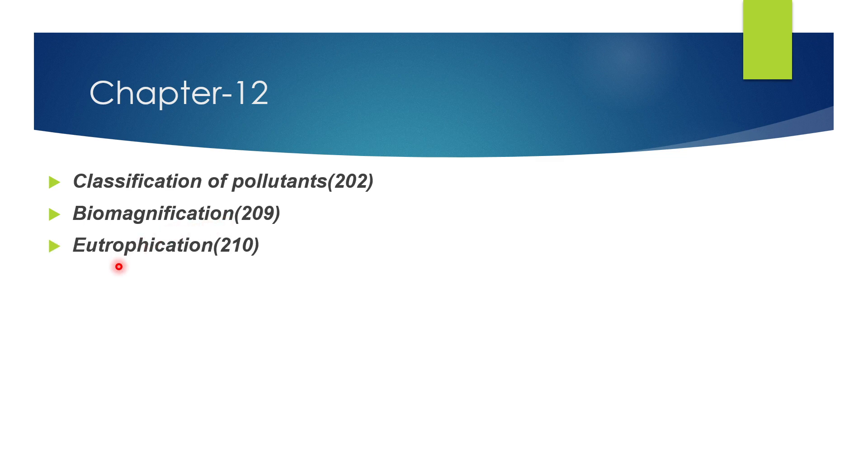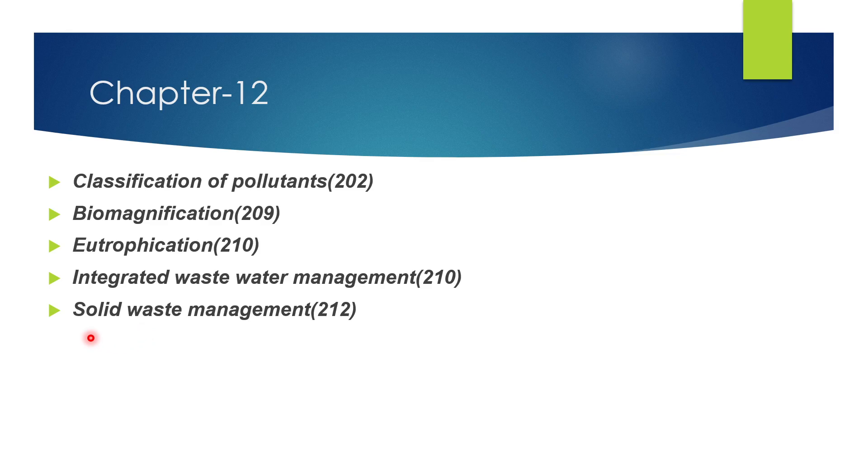Moving on to chapter 12, Pollution and Environmental Issues. Classification of pollutants: biodegradable and non-biodegradable - three types with definition and examples, page 209. Define biomagnification. Biomagnification of DDT is an important question, page 209. Next, what is eutrophication? Page 210. Explain integrated wastewater management - five mark question, page 210.